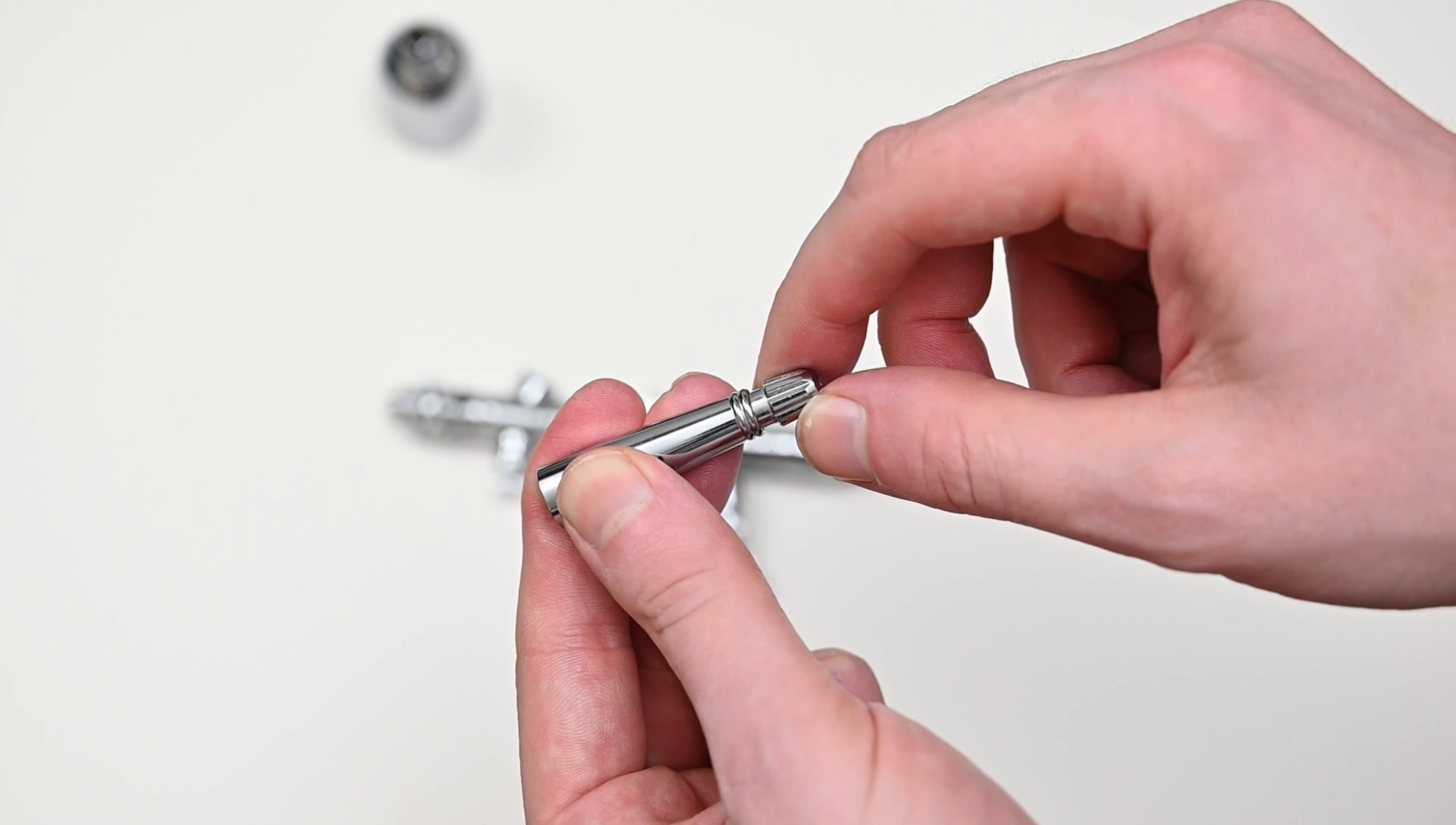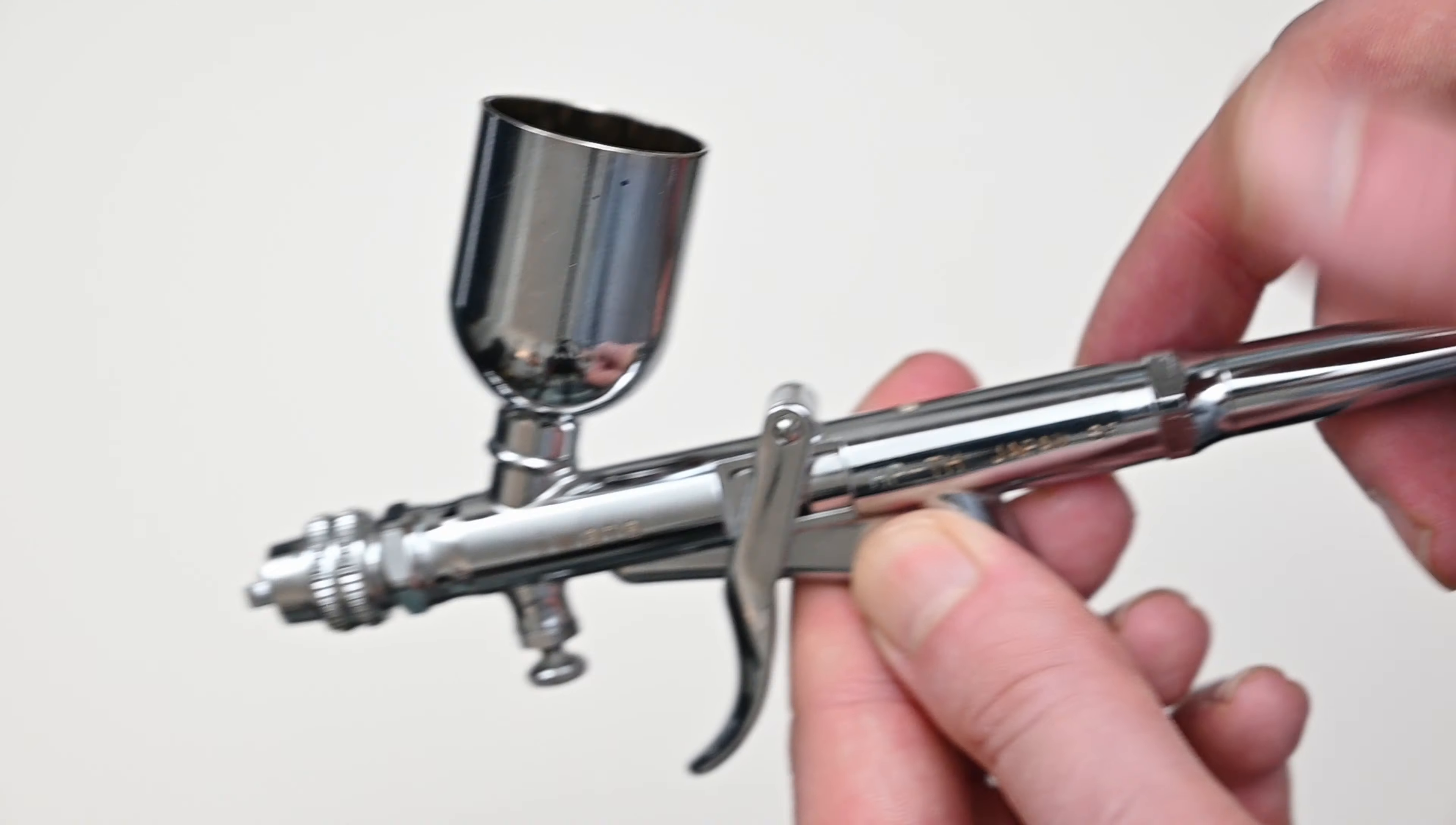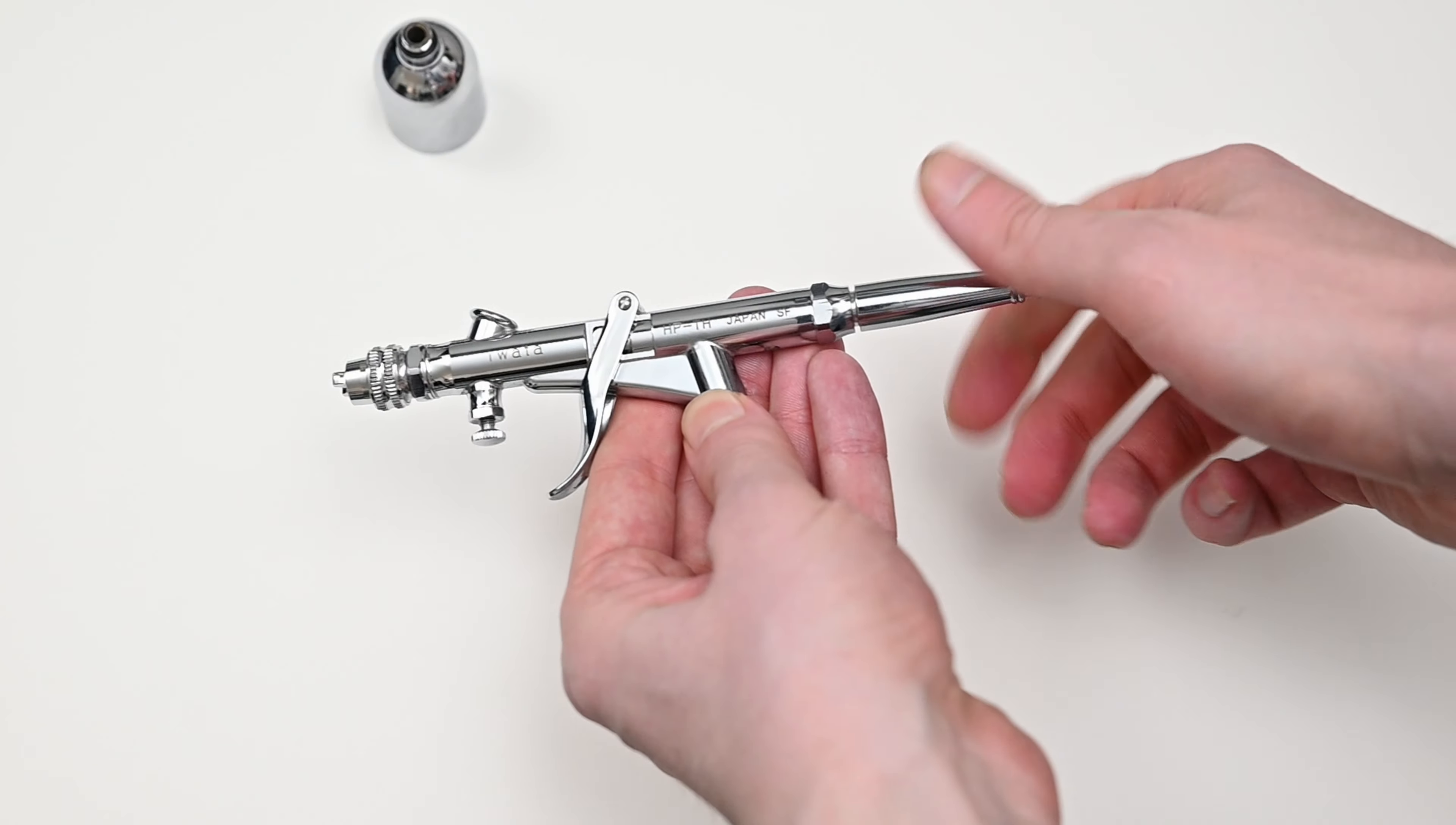On the back of the rear handle this airbrush is equipped with the needle stop. By tightening this knob down you limit the distance that you're able to pull the trigger back. So if you'd like you could lock it at a certain point that way when you pull back on the trigger you're going to get the same amount of paint every single time.